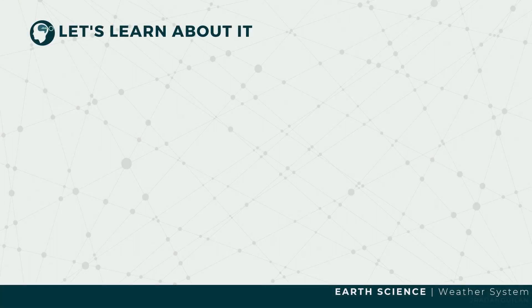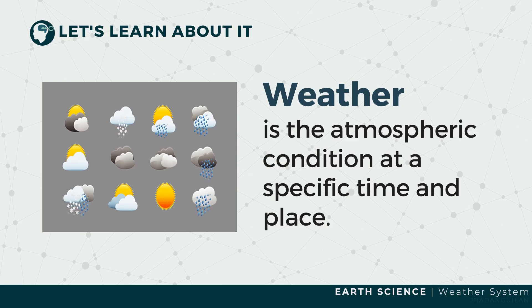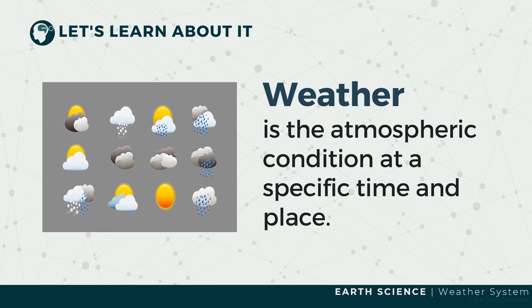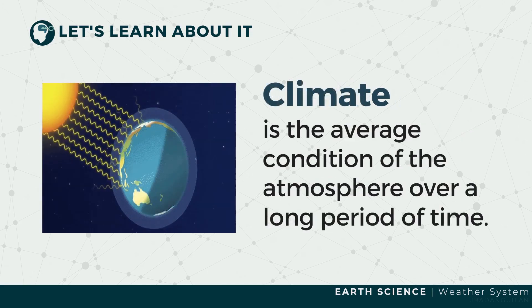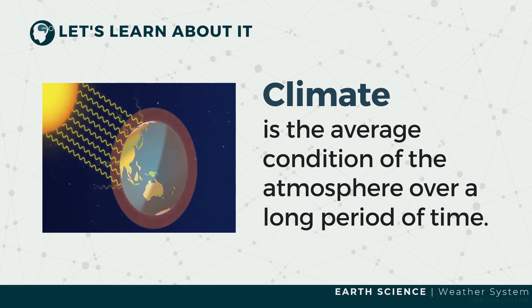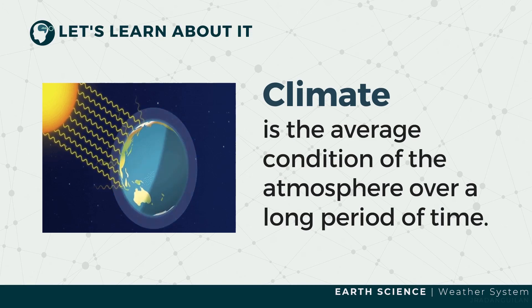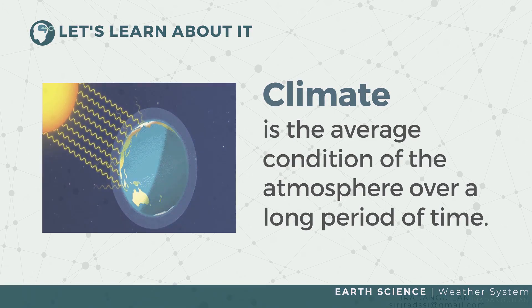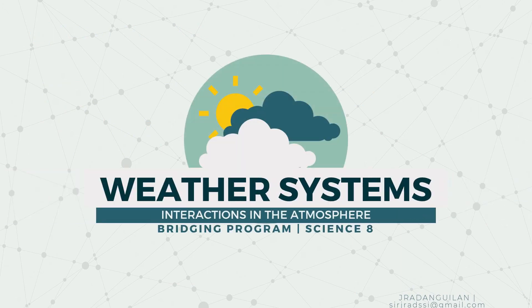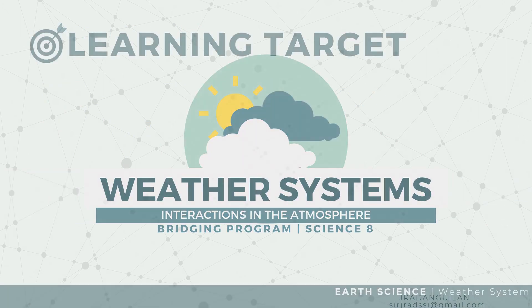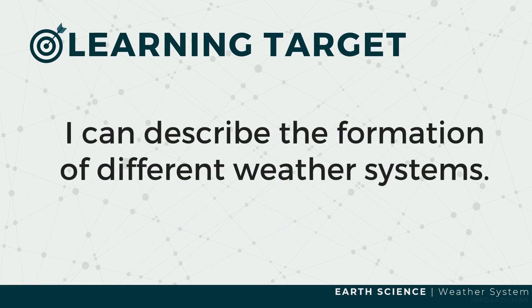In the previous video, we learned that weather is the condition of the atmosphere in an area at a specific time. Climate, on the other hand, deals with a set of weather conditions for a long period in a region. In this lesson, we will discuss the different weather systems and describe how these weather systems are formed.